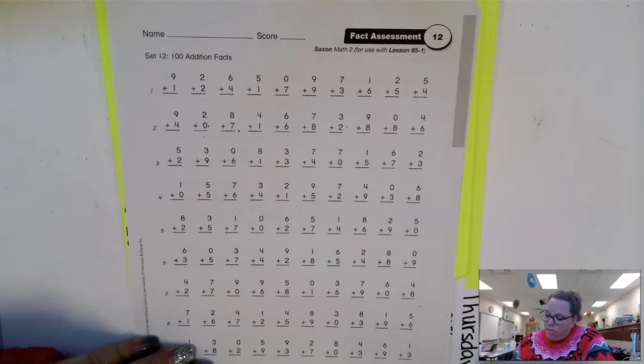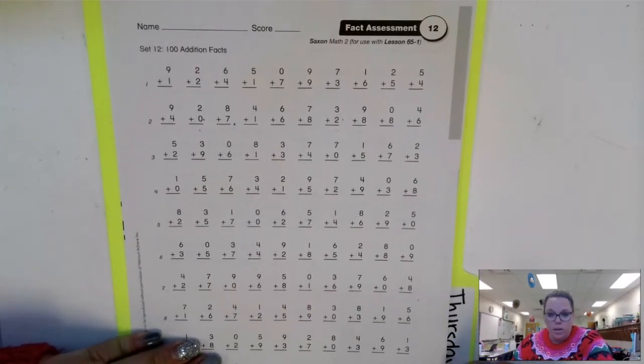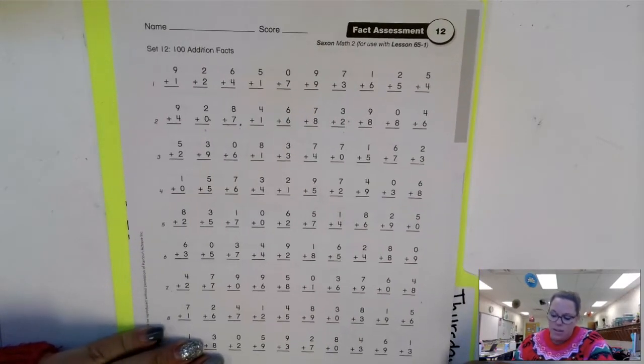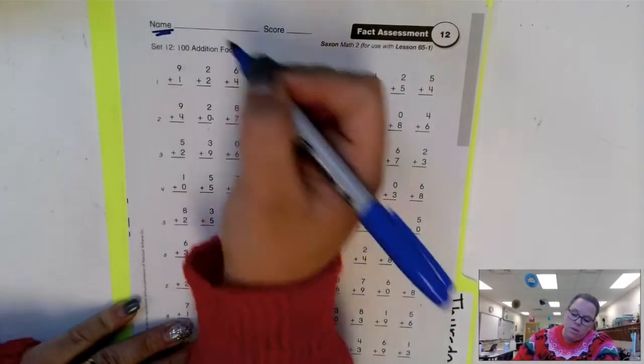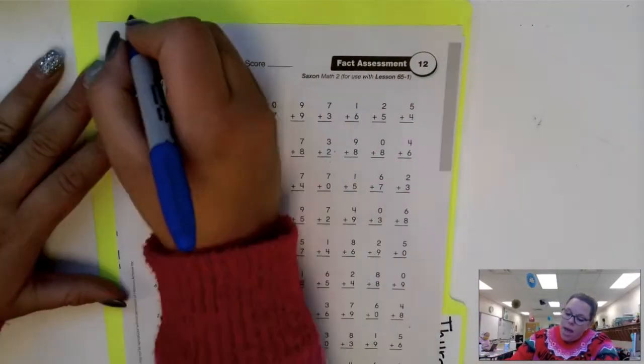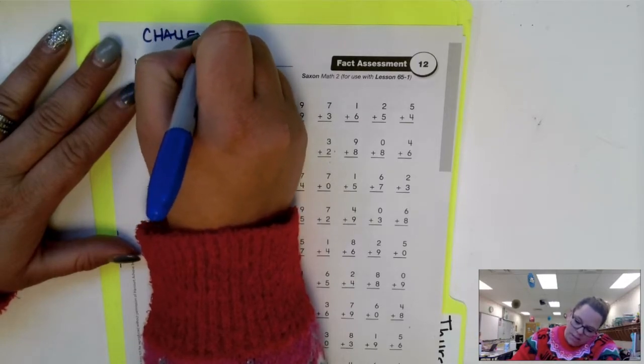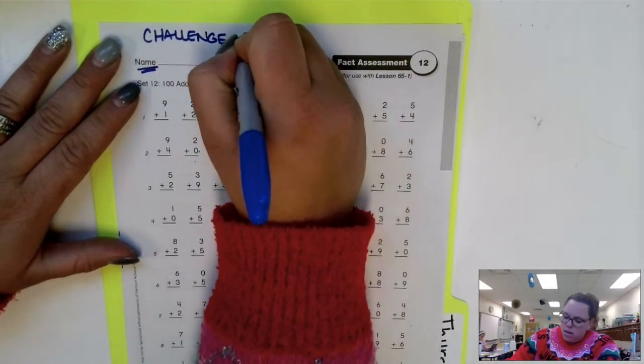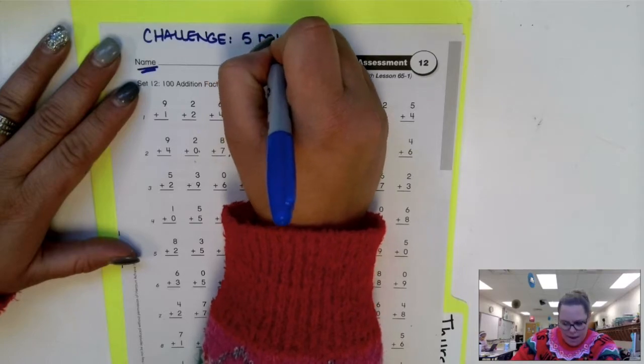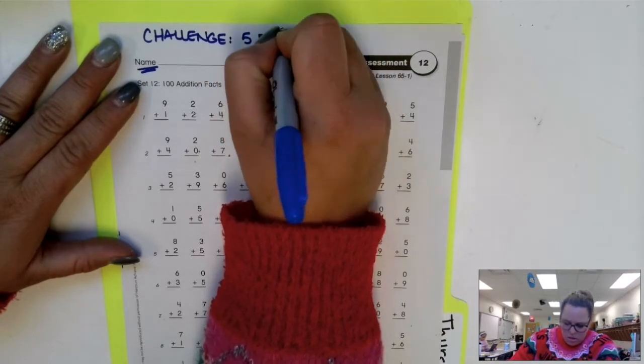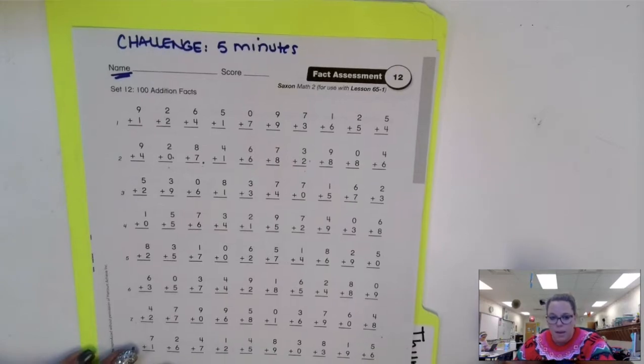So today for your fact assessment, you have 100 addition facts. Make sure that your name is on it. And my challenge for you is to set a timer. Set your timer for five minutes and see how many you can get done in those five minutes.